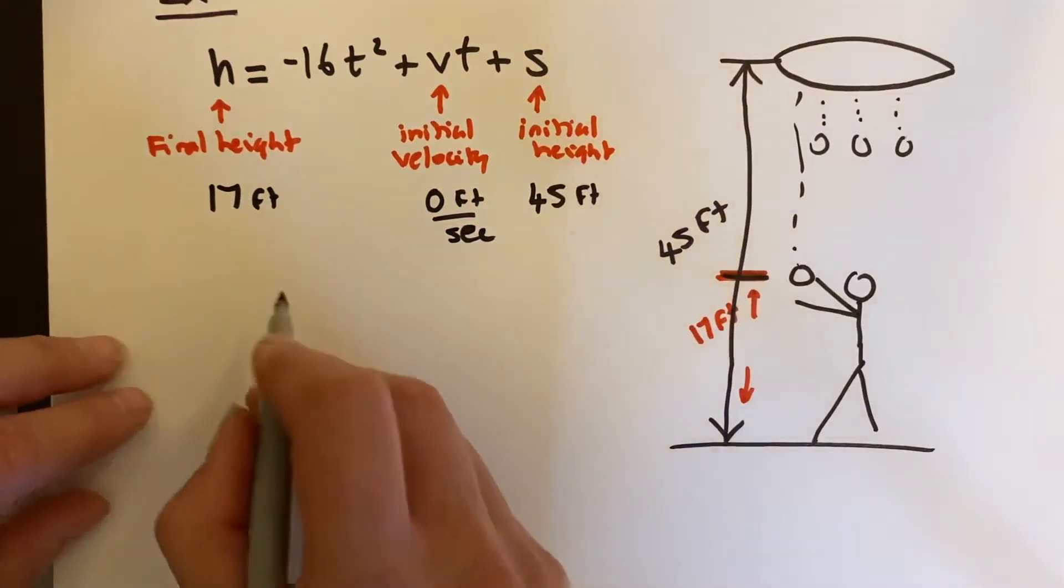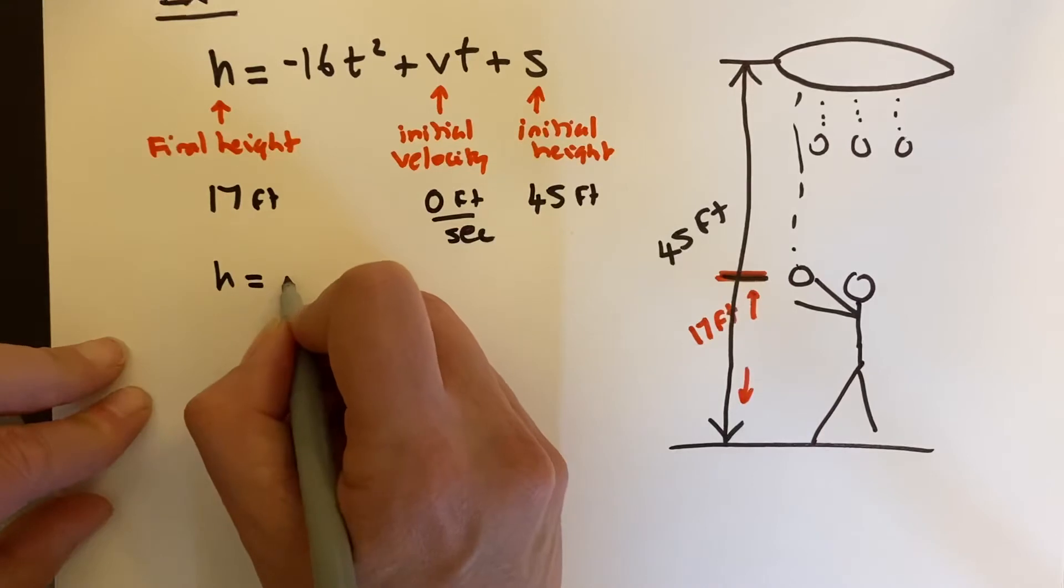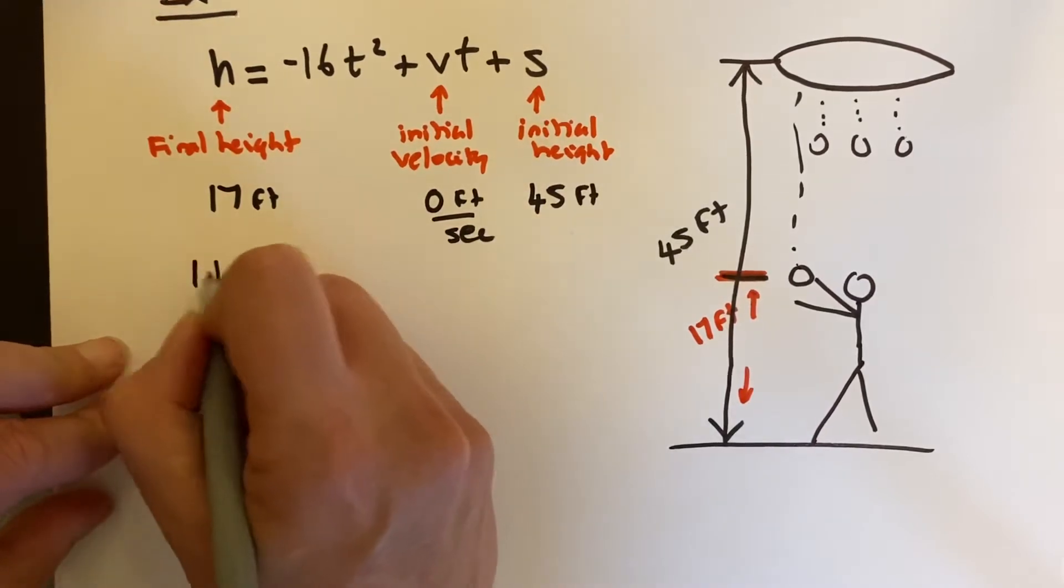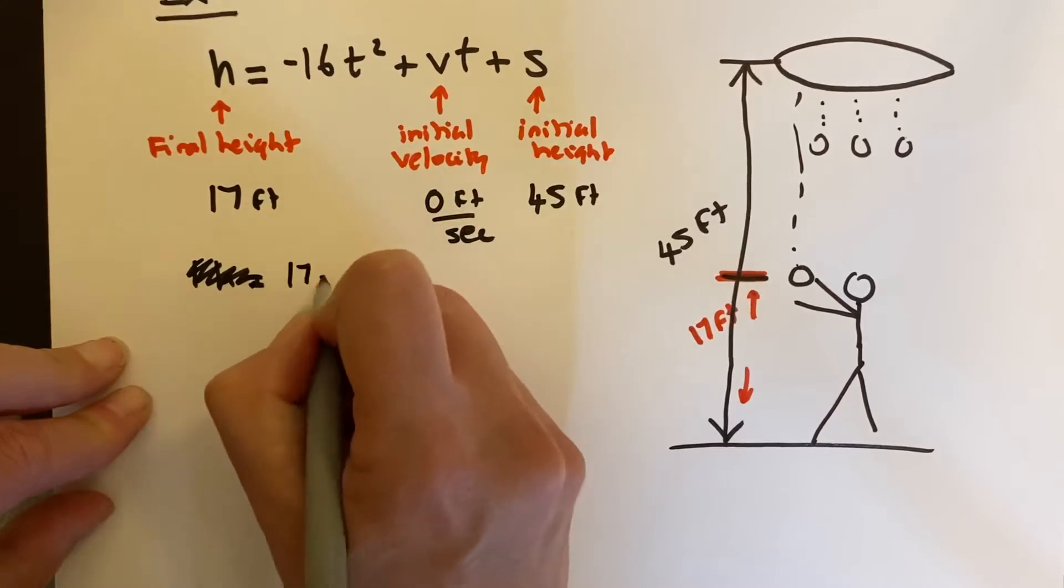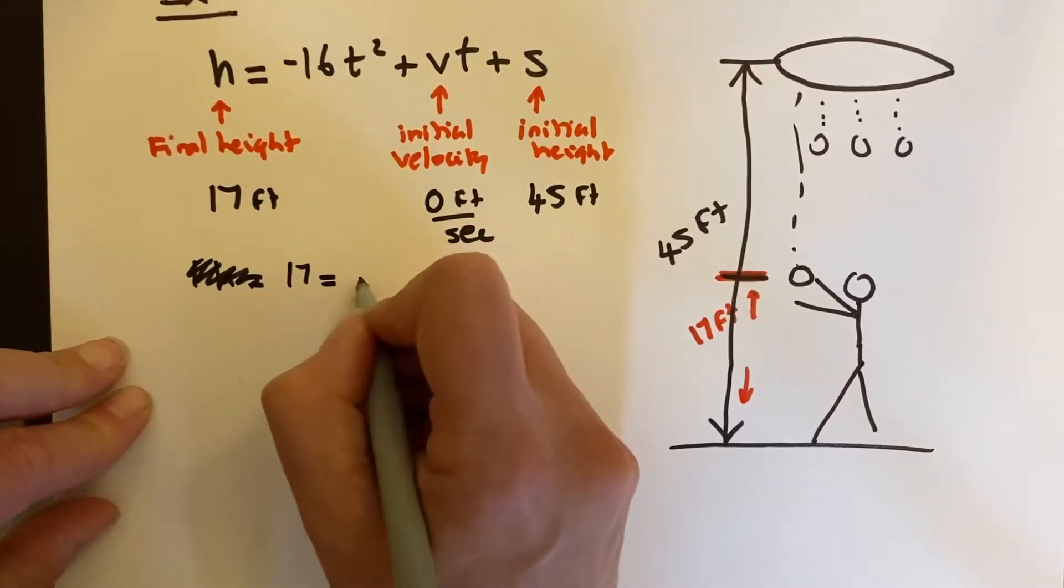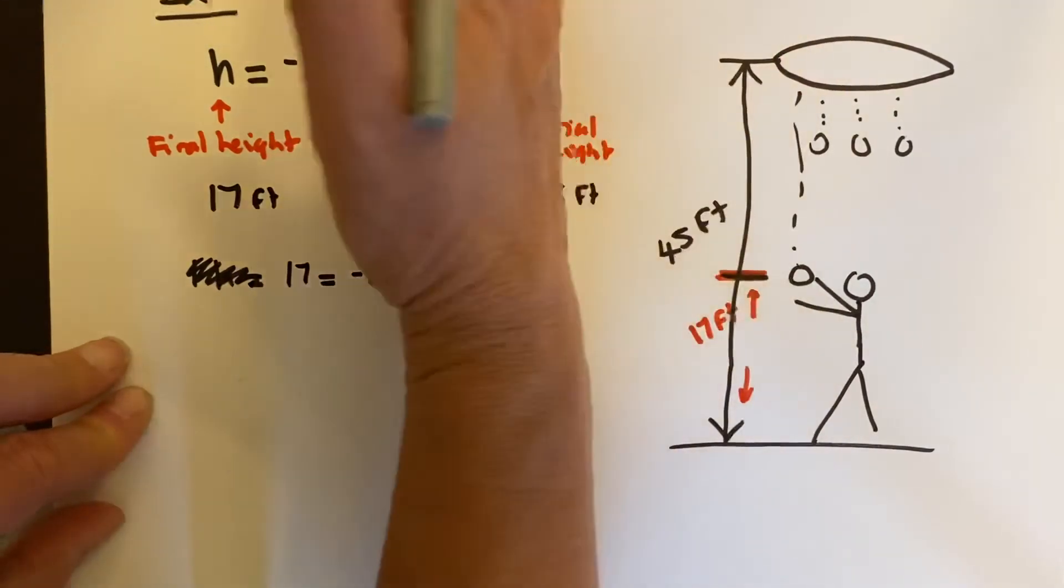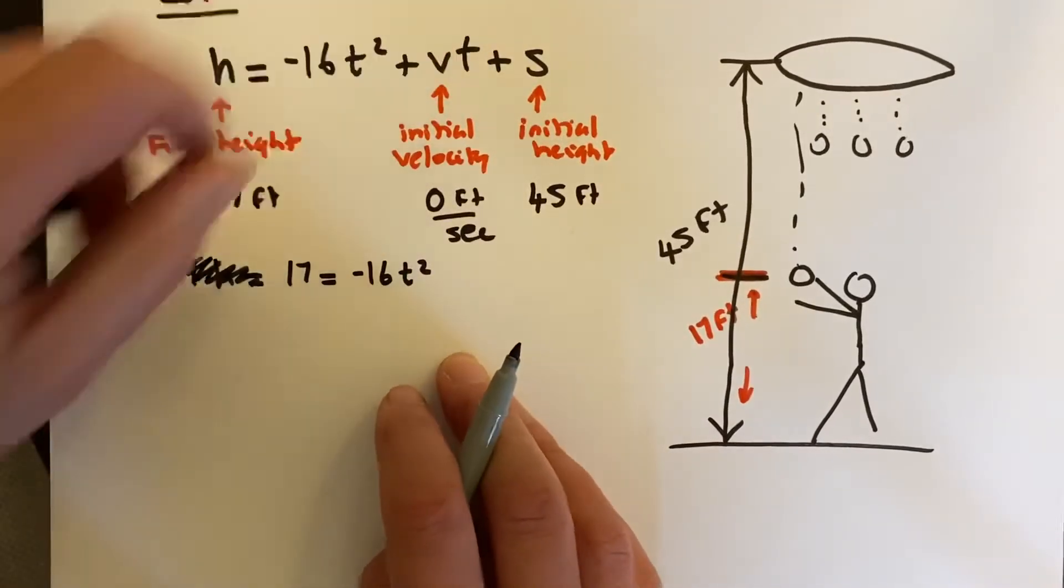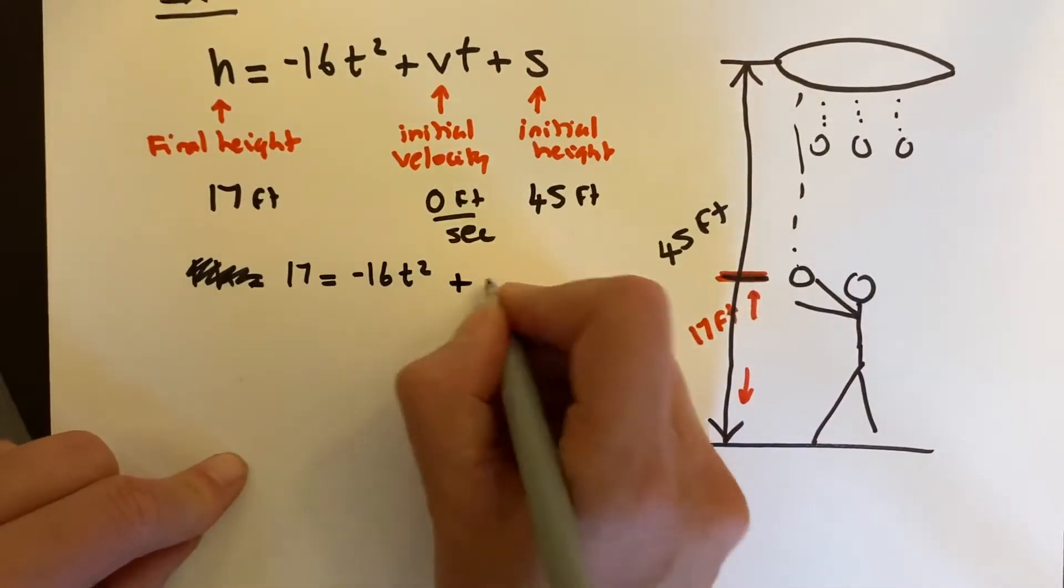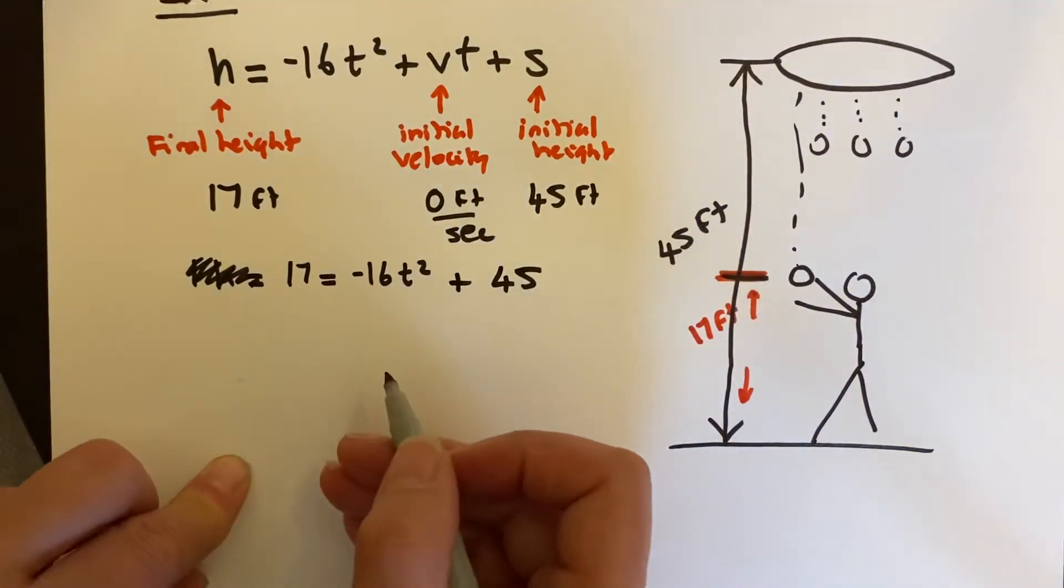Okay, so now we can take that information and write our equation. H equals—so H meaning 17. Let me rewrite that. 17 equals negative 16t squared. This term disappears. Of course it would have to, since we're not using that in this chapter. And I need to solve this equation.